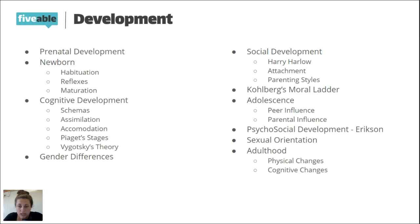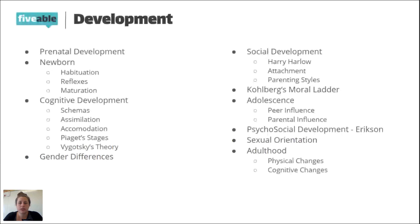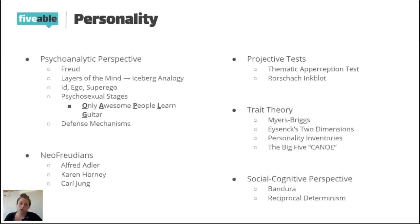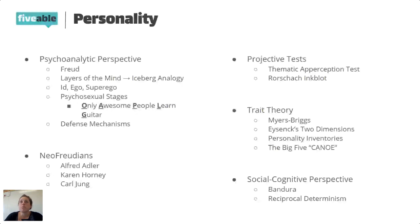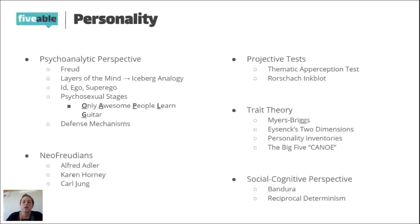For Freud's psychosexual stages, use the acronym 'Only Awesome People Learn Guitar.' O = Oral (babies derive pleasure from the mouth). A = Anal (learning potty training). P = Phallic. L = Latency (hidden, not present). G = Genital (when we reach sexual maturity). That acronym should help you remember the order of the stages.